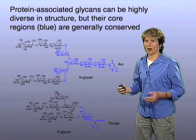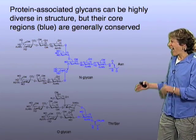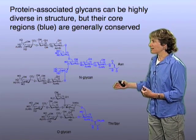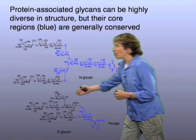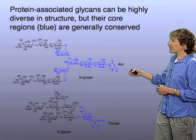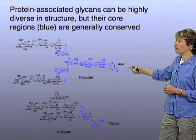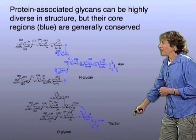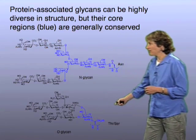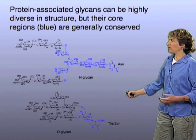In nature, these structures can be far more complicated. I've taken it up a notch in this slide just to show you examples of actual glycan structures that have been found on human glycoproteins. These are examples of two varieties: one we call an N-glycan, because it's attached to a nitrogen atom on the side chain of an asparagine residue within the protein scaffold. This variety is called an O-glycan, because it's linked to the oxygen atom on the side chain of either serine or threonine within the protein scaffold.